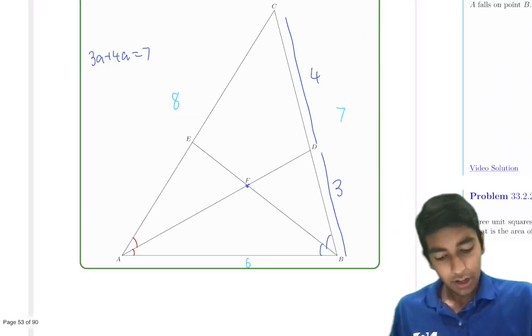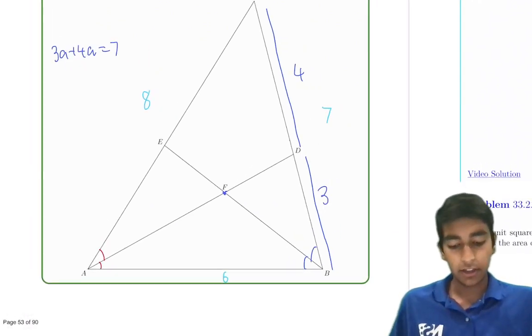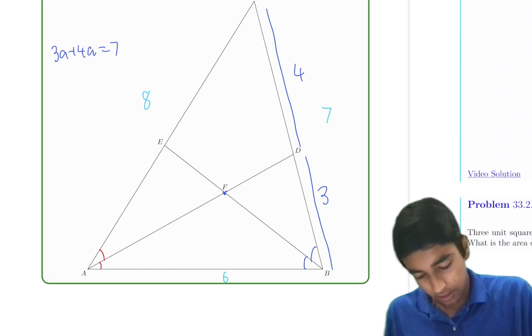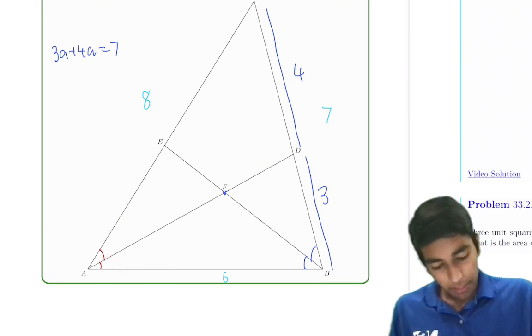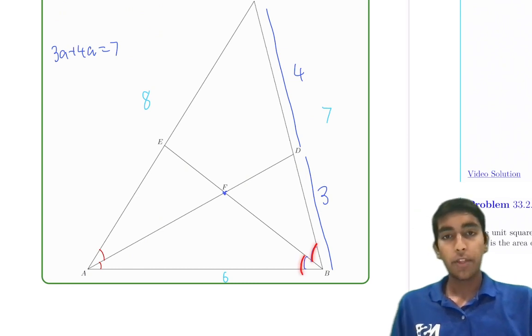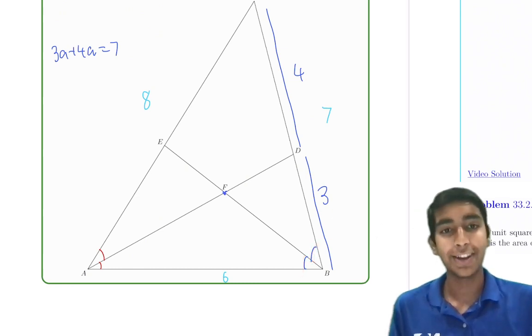That's good. We've already applied angle bisector theorem once, using this angle bisector right there. But what about this angle bisector? That also gives us more valuable information about the triangle.